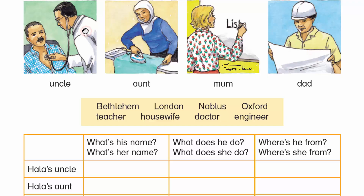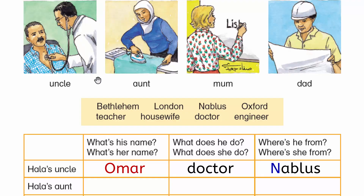Who's this, Hala? This is my uncle. What's his name? Omar. How do you spell that? O-M-A-R. What does he do? He's a doctor. Where's he from? Nablus.